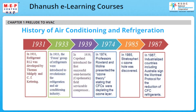In 1931, refrigerant R-12 was developed by Thomas Midgley and C.F. Kettering. In 1933, the Freon group of refrigerants were introduced to revolutionize the refrigeration and air conditioning industry. In 1939, Copeland introduced the first successful semi-hermetic field serviceable compressor. In 1974, Prof. Roland and Molina presented the ozone theory, stating that CFCs were depleting the ozone layer. In 1985, the stratospheric ozone hole was discovered. In 1987, industrialized countries including Australia signed the Montreal Protocol for the reduction of CFC refrigerants.